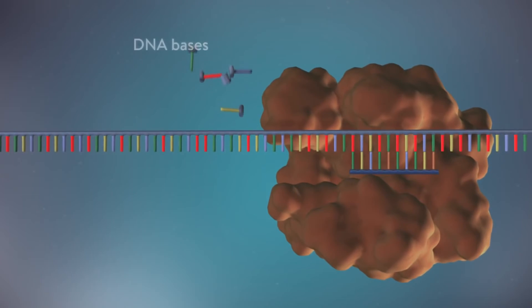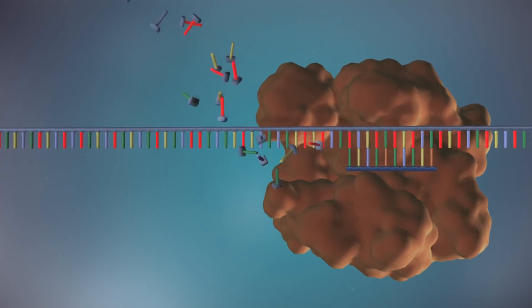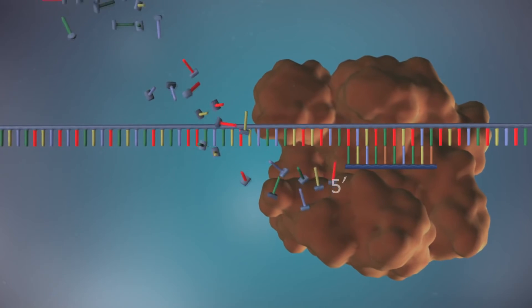DNA polymerase can only add DNA bases in one direction, from the five prime end to the three prime end.